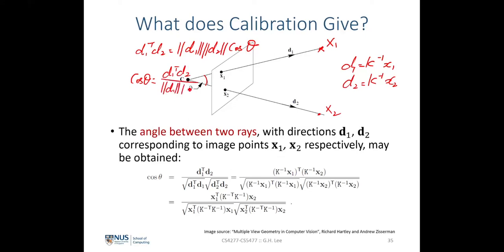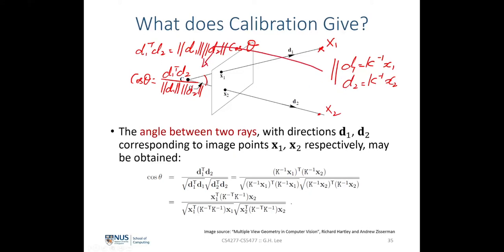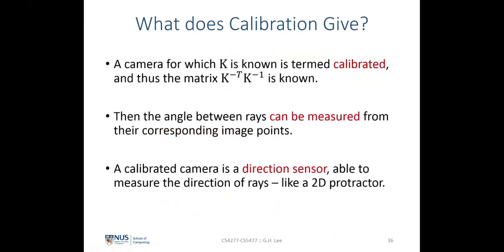Substituting the direction expressions in terms of camera intrinsics and image points back into the cosine relation gives an equation expressed in terms of image points and camera intrinsics, which can be further simplified. This means that if a camera is calibrated, we can use it to measure the angle between any two image points, which is equivalent to the angle between any two 3D points in the real scene. So a calibrated camera acts like a 2D protractor — a directional sensor that measures angles between any two points X1 and X2.